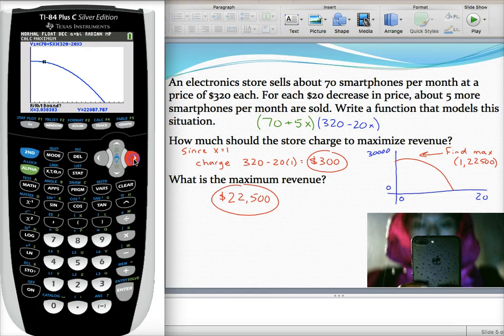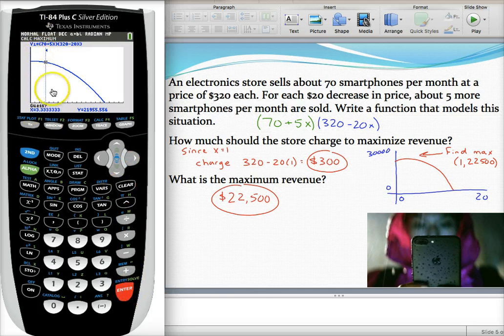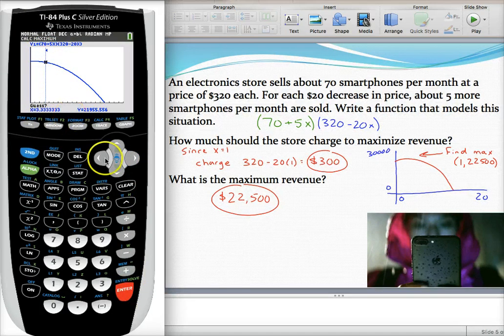Your right bound just somewhere down here, the high point somewhere in there. So that should be good. There's my two bounds, left and right bounds. Guess just hit enter.